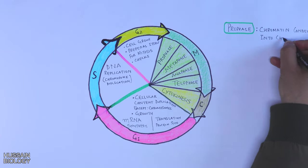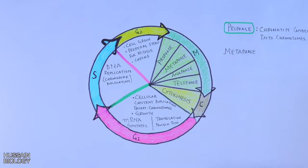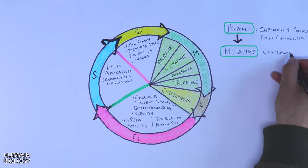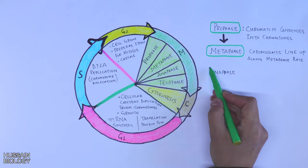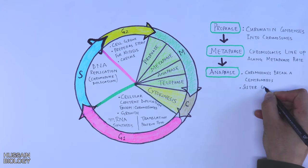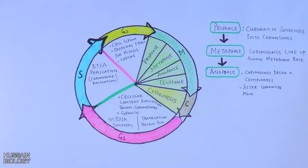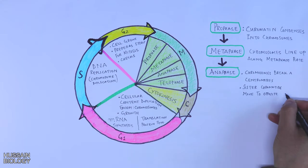Then we have metaphase, where chromosomes line up along the imaginary metaphase plate. From here, the cell gets into anaphase, where chromosomes break at centromeres and then the sister chromatids move towards the opposite ends of the cell.